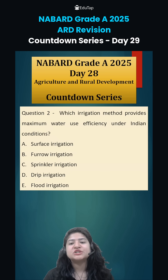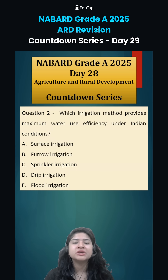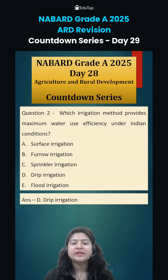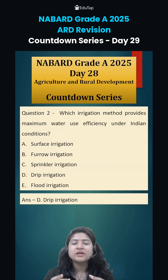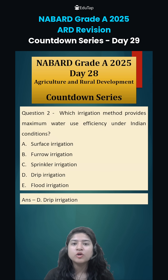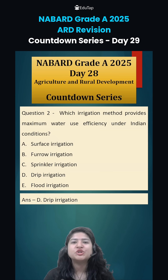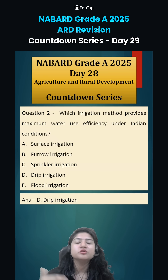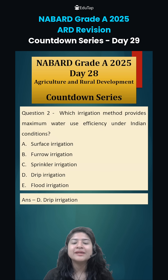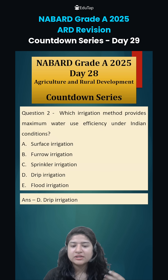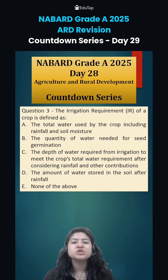Question number 2: which irrigation method provides maximum water use efficiency under Indian conditions? The correct answer is drip irrigation, because here water is given directly to the roots of the plant. It prevents a lot of wastage that can happen due to evaporation, surface runoff, or deep percolation. Especially under Indian conditions where temperature is quite high, drip irrigation suits the best.